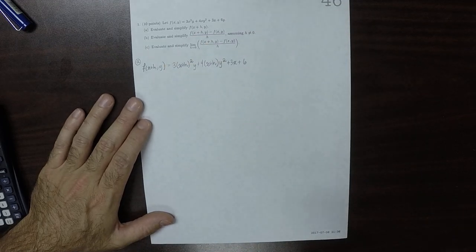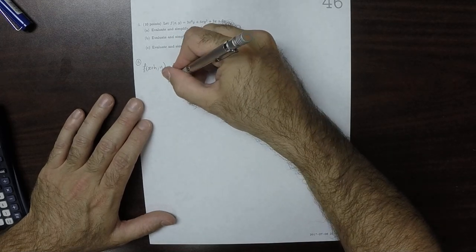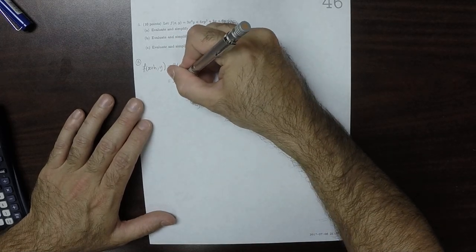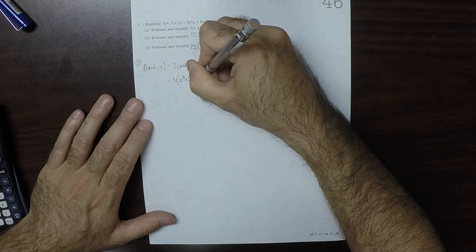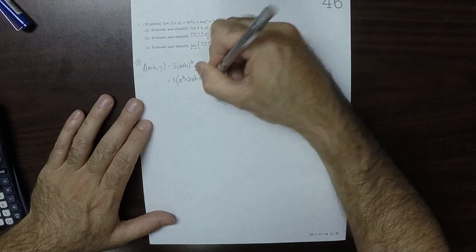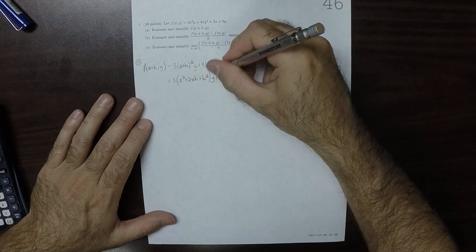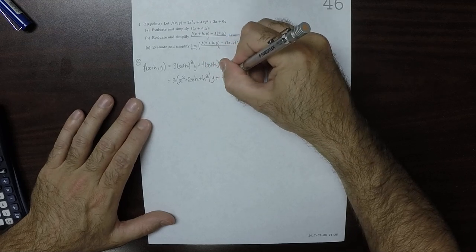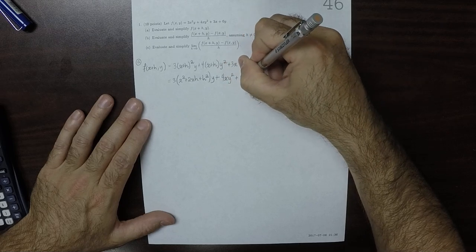Okay, so now we're supposed to simplify that as much as possible. So that would be 3 x squared plus 2xh plus h squared y, and then plus 4xy squared plus 4hy squared.